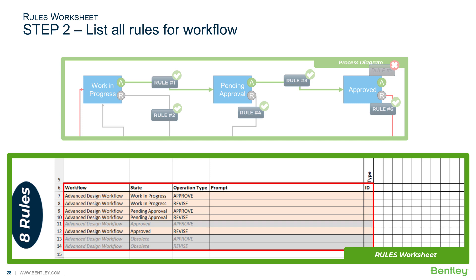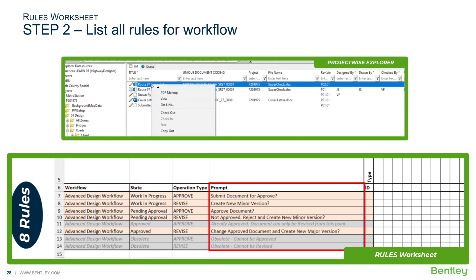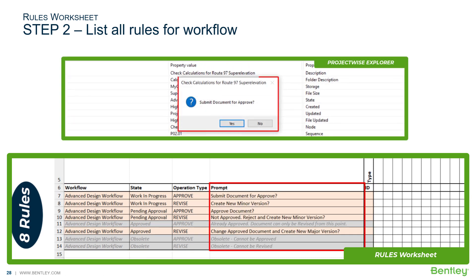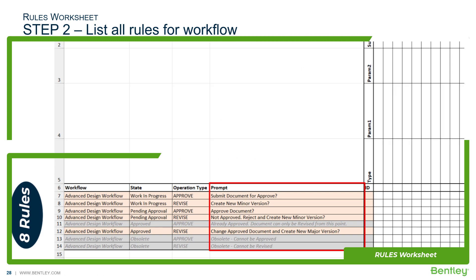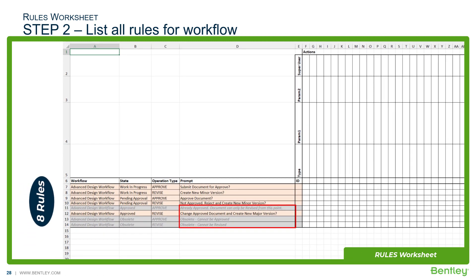For each rule that applies, enter a prompt. The prompt will display as a yes or no dialogue when the user initiates the rule from the ProjectWise interface. For the non-applicable rules, use the prompt column to convey to other spreadsheet users why the rule is not applicable. To finish the rules listing, add a unique ID for each rule.